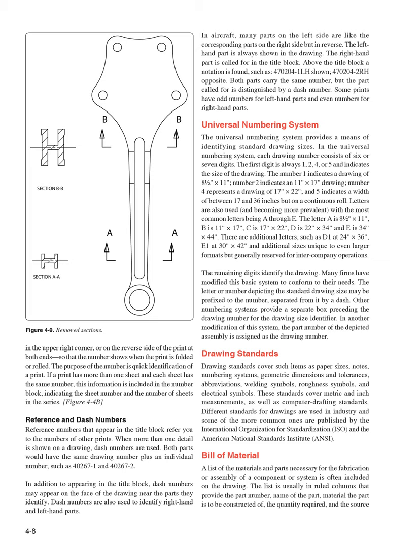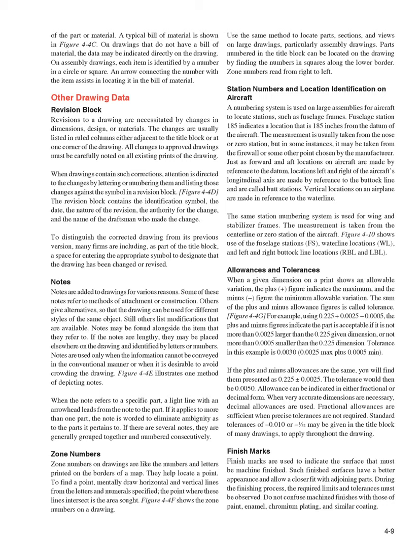Bill of Material: A list of the materials and parts necessary for fabrication or assembly of a component or system is often included on the drawing. The list is usually in ruled columns providing the part number, name of the part, material, quantity required, and source of the part or material. On drawings without a bill of material, data may be indicated directly on the drawing. On assembly drawings, each item is identified by a number in a circle or square, with an arrow connecting the number to the item.